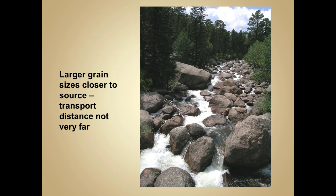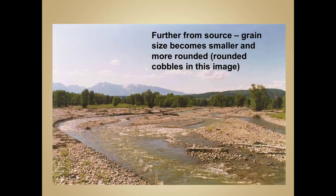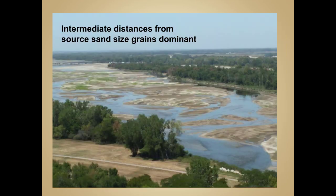This sorting process takes place over a distance as a current such as water slows down and different sediment-sized particles settle out. In this picture, close to the source — a mountain stream — the grain size is much larger, boulder size. A little bit further away from that source, the grain size has decreased and the cobbles are much more rounded. Even further from the source, we've moved into more fine-grained, sand-sized particles and much more well-sorted sediment.